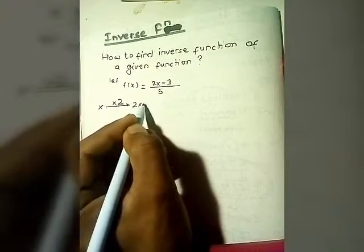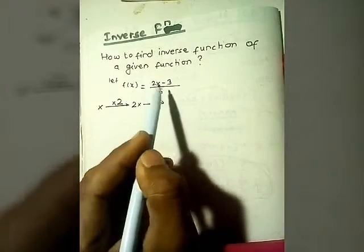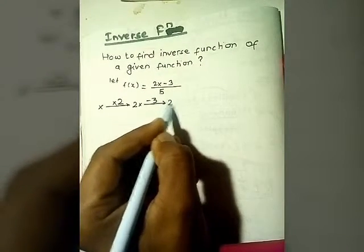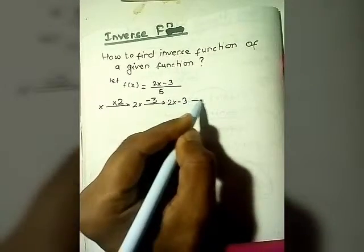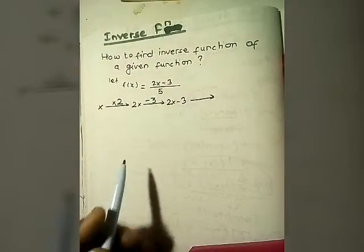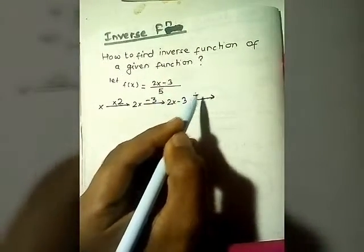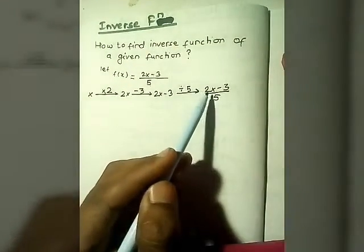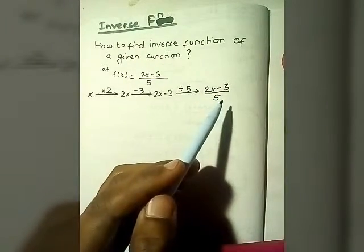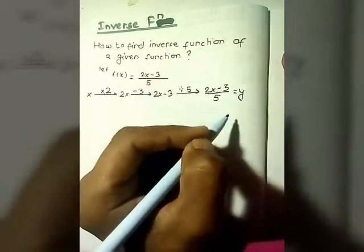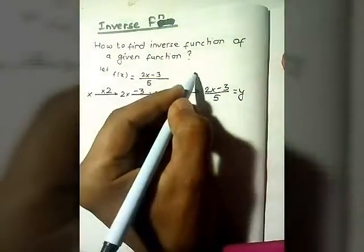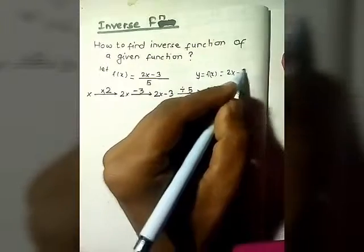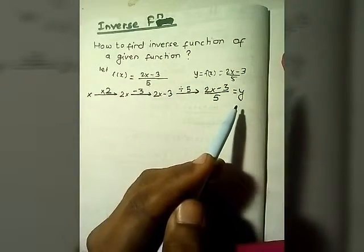After multiplying by 2, we subtract 3, giving us 2x minus 3. Then we divide by 5, which gives us 2x minus 3 divided by 5. This equals y, where y equals f of x equals 2x minus 3 divided by 5. This is our result from the flow method.